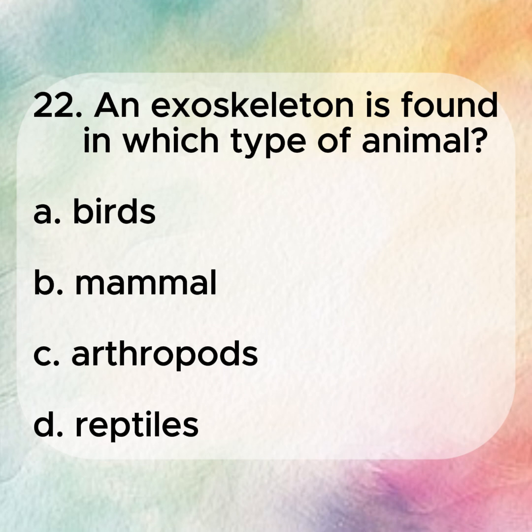22. An exoskeleton is found in which type of animal? A. Birds. B. Mammals. C. Arthropods. D. Reptiles.